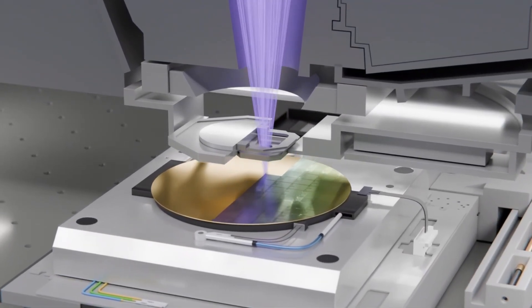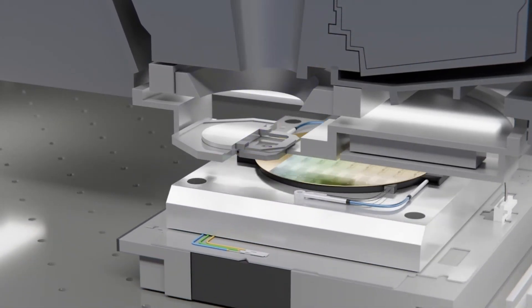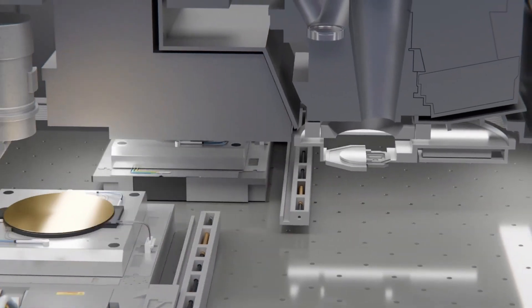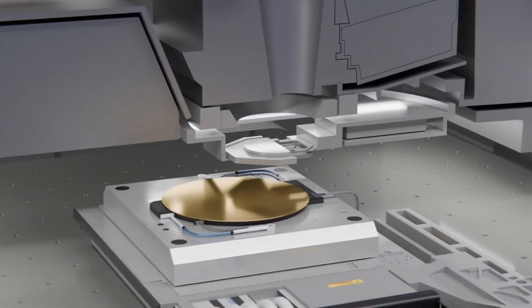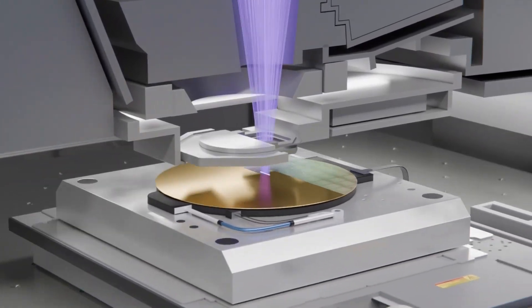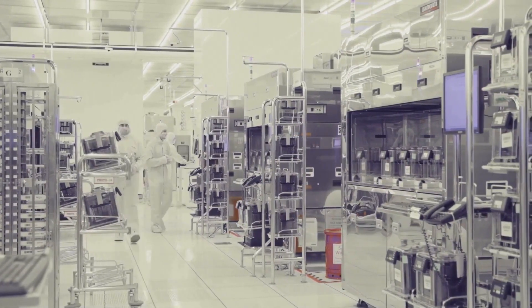What China has built is a solid-state laser that produces coherent 193nm light. Traditionally, this is done using gas-based excimer lasers, which require rare gases like argon and fluorine, constant maintenance, and very high power. These systems are expensive and China struggled to buy them due to export restrictions.